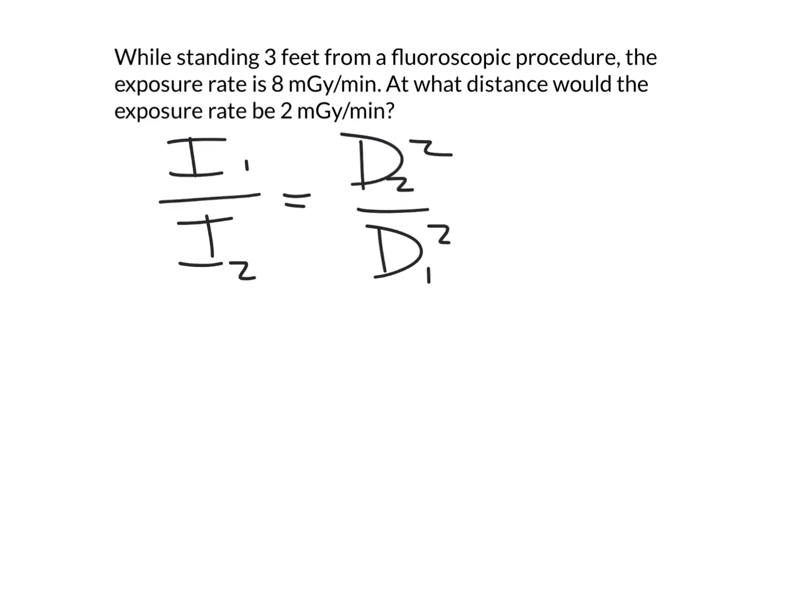So the way that we'll set this up is we're going to put the intensities over on this side. These are expressed in milligray per minute - that unit cancels out. All we're interested in is a unit of distance.